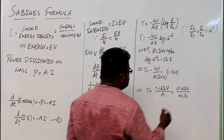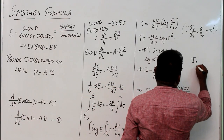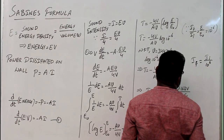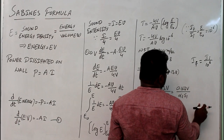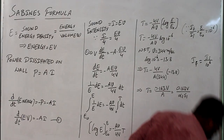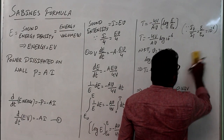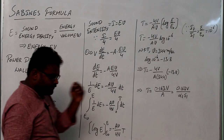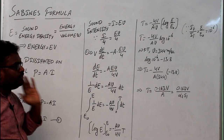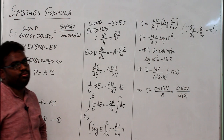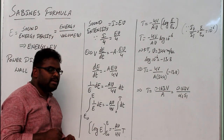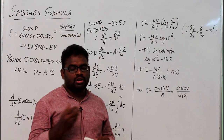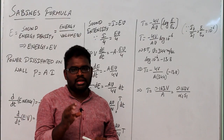The basic expression for reverberation time uses the ratio of final to initial intensity as 10 to the power minus 6 — one millionth of its initial value. So we can write: I_final = I_initial × 10^(-6), or I_final / I_initial = 10^(-6). For that, the reverberation time expression needs to be derived. This is important because reverberation time should not be too long and should not be too short — it should be an optimum value.